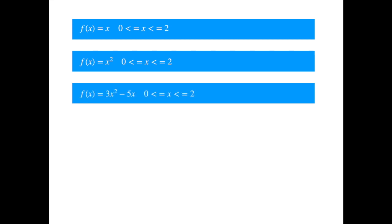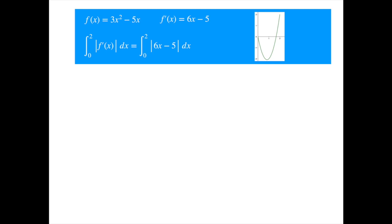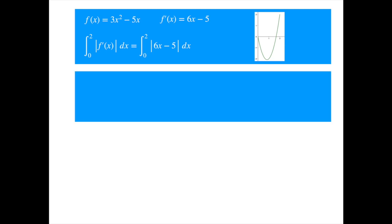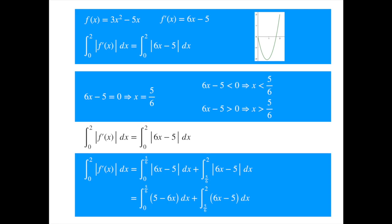Let's move to the third function now. To find its total variation, we first calculate its derivative. We then integrate over the given interval. Now, unlike the other two functions, this function is not monotonic, meaning the derivative changes sign. We will need to be careful about the absolute value. The derivative is 0 at x equal to 5 over 6, and is negative to the left and positive to the right of this value of x, as one can easily see from the graph of the function. So to get rid of the absolute value, we divide the interval into two halves. We then multiply the integral over the lower interval by minus 1 to make it positive. You can easily verify that the sum of these two comes out to be 37 over 6, and the quadratic variation is 0.